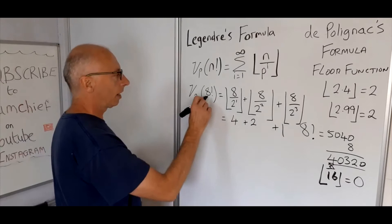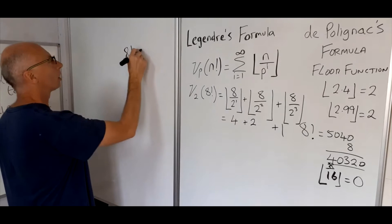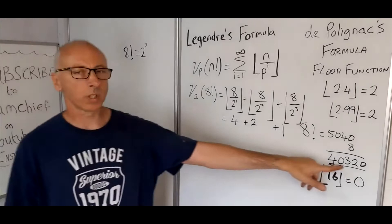So basically what it's telling us now is that 8 factorial, part of the prime factorization, 2 will appear 7 times in the factorization of 40,320.